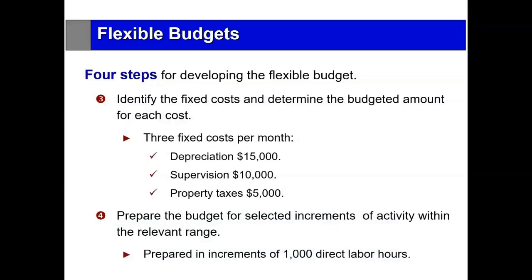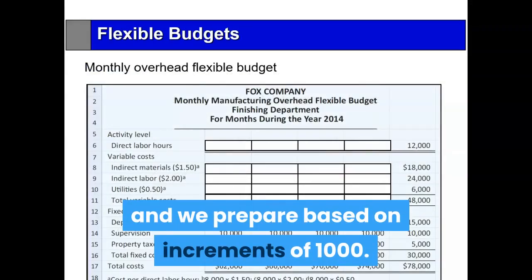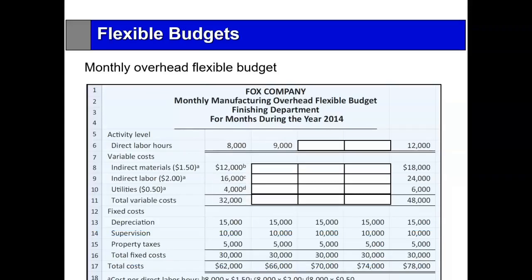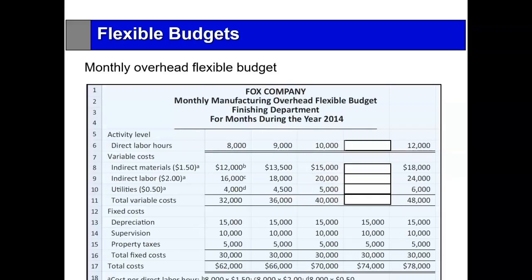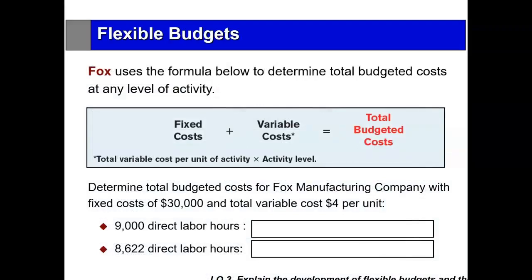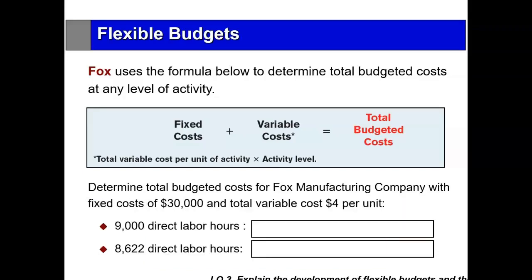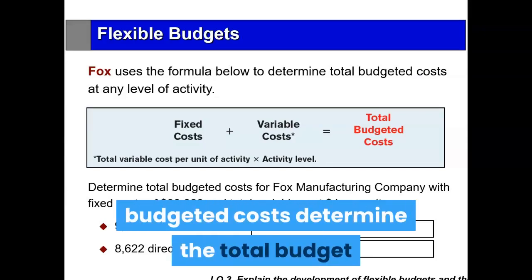Identify the variable costs: indirect materials estimated at $180,000 on 120,000 direct labor hours equals $1.50 per direct labor hour; indirect labor $2.00 per hour; and utilities $0.50 per hour. The fixed costs have nothing to do with activity, so they remain the same. We prepare the budget at increments of 1,000 direct labor hours, producing four flexible budgets: one at 8,000, one at 9,000, one at 10,000, and one at 11,000. Fox uses a formula — fixed cost plus variable cost equals total budgeted cost.